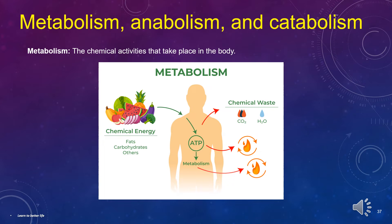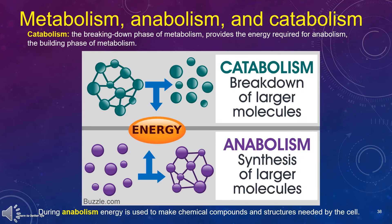Now let's learn about metabolism, anabolism, and catabolism. Metabolism refers to the chemical activities that take place in the body, for example converting the food we eat into energy. Catabolism is the breaking-down phase of metabolism and provides the energy required for anabolism, the building phase of metabolism. During anabolism, energy is used to make chemical compounds and structures needed by the cell.